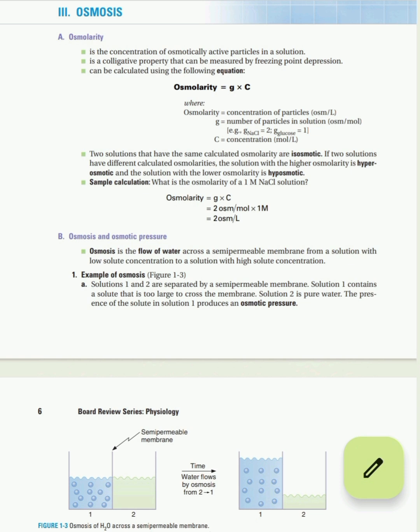So now you understand the definition: osmosis is the flow of water across a semi-permeable membrane from a solution with low solute concentration or lower osmotic pressure. Now here is another concept — osmolarity. It is the concentration of osmotically active particles in a solution. The formula is: osmolarity = g × c, where g is the number of particles of that solute in solution and c is the concentration in moles per liter. For example, sodium chloride has two particles, and if its concentration is one mole per liter, we multiply these two to get the osmolarity.